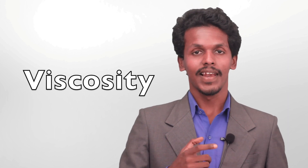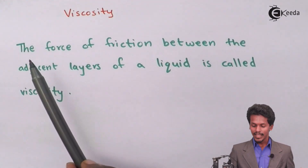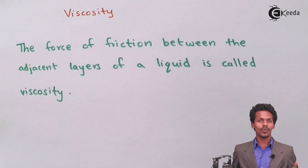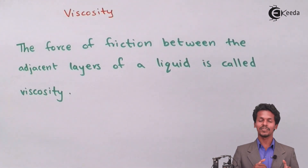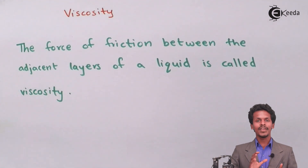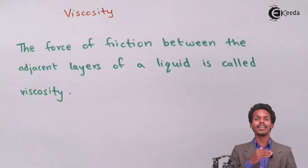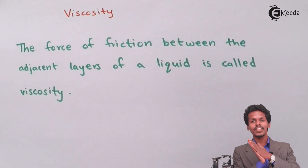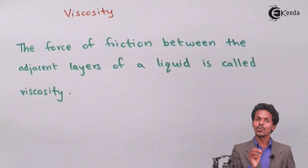So what is viscosity? Viscosity means the force of friction between the adjacent layers of a liquid. When a liquid flows, it forms multiple layers, and the friction that exists between two adjacent layers of the liquid is basically known as viscosity.